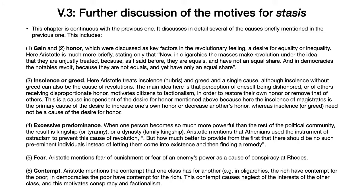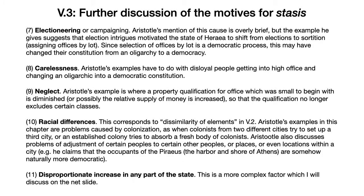Fear is another motive — Aristotle mentions fear of punishment or fear of an enemy's power as a cause of conspiracies, naming historical examples. Contempt is also a cause: in oligarchies the rich have contempt for the poor, and in democracies the poor have contempt for the rich; this contempt causes neglect of the other class's interests and motivates conspiracy and factionalism. Aristotle also discusses electioneering or campaigning as a cause of stasis — his example suggests that election intrigue motivated a particular state to shift from elections to sortition, which, since sortition is considered democratic and elections oligarchic, may have changed the constitution's type.